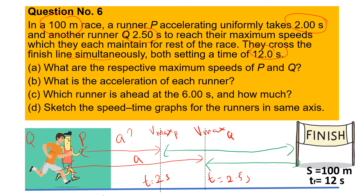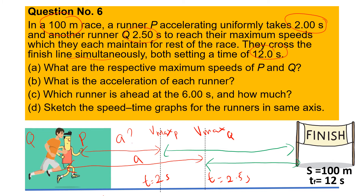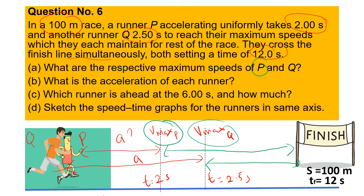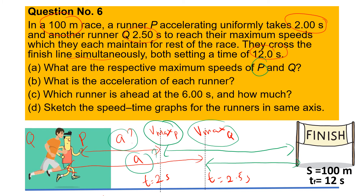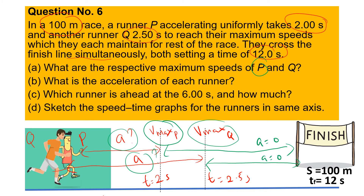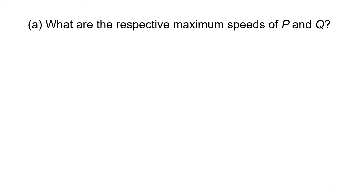The first question asks us to find the maximum speed of P and Q — that is, v-max for P and v-max for Q. We have two conditions: one with unknown acceleration for both P and Q, and the other where acceleration is zero because they maintain their speed — meaning no acceleration.